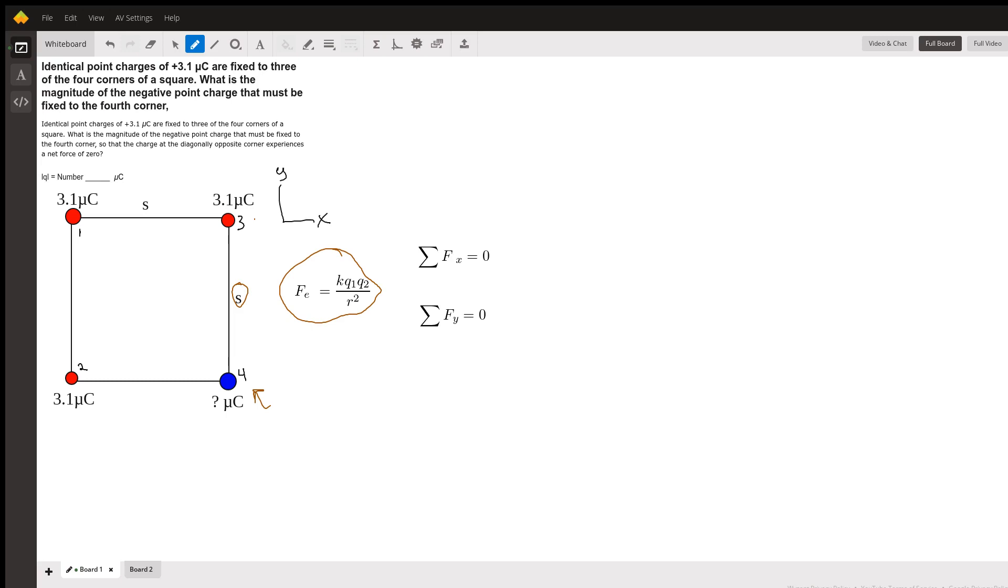Because the charge in the corner opposite our unknown charge—in this case, charge one—is stationary, we know that the sum of forces on that charge must be equal to zero.